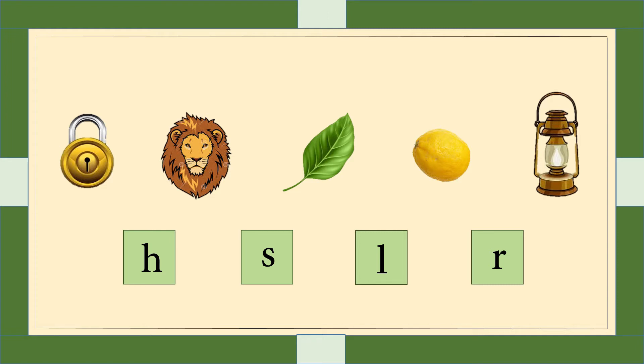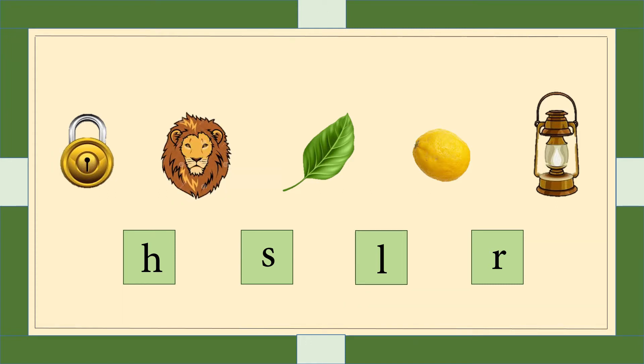पहली तस्वीर का नाम है Lock, दूसरी तस्वीर का नाम है Lion, तीसरी तस्वीर का नाम है Leaf, चोथी तस्वीर का नाम है Lemon, और आखिरी तस्वीर का नाम है Lab। इन तमाम तस्वीरों के नाम 'L' की आवाज़ से शुरू होते हैं، तो दायरा 'L' पर بنائیں گے۔